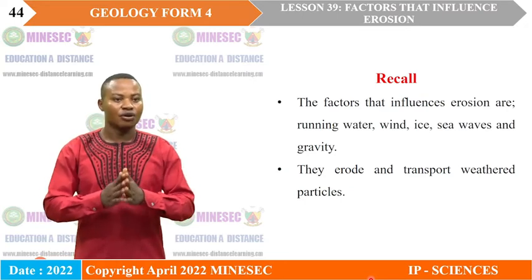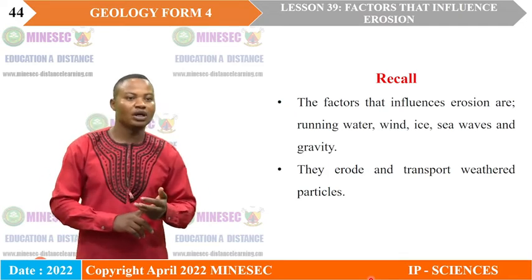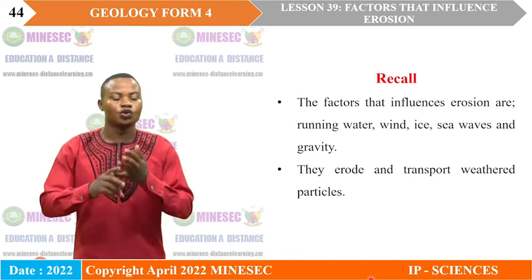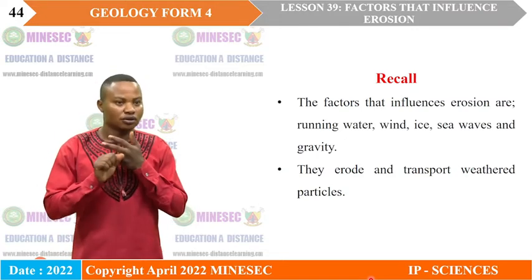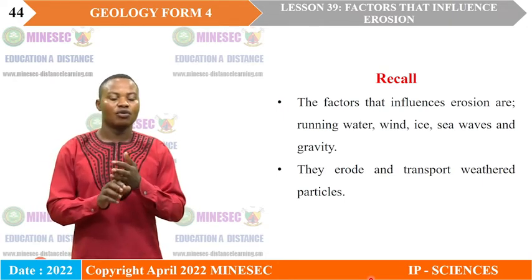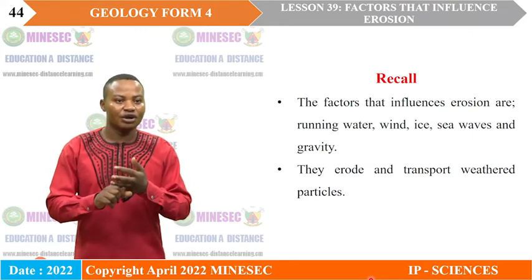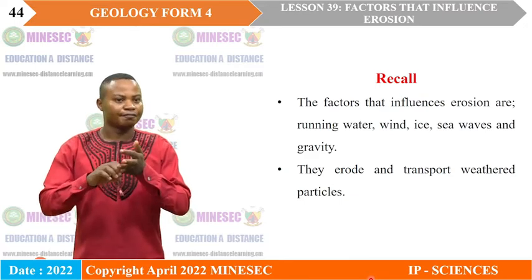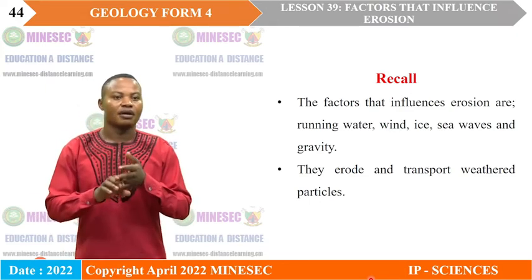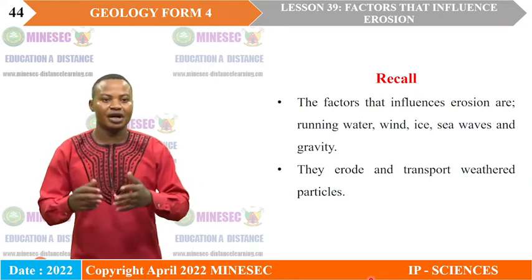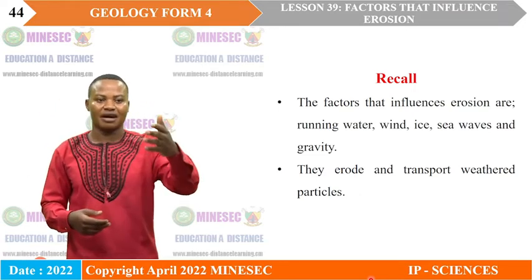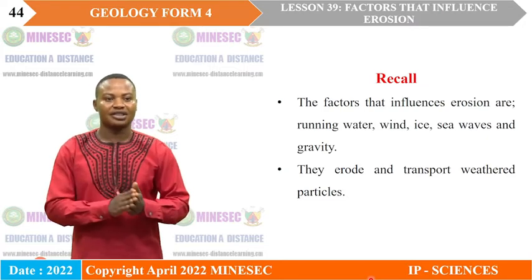Running water influences erosion through erosional processes — hydraulic action, abrasion, attrition, and solution — and transportational processes — traction, saltation, suspension, and solution. Wind action, dominant in the desert, influences erosion through erosional processes — deflation, abrasion, and attrition — and transportational processes — surface creep, suspension, and saltation. Sea waves have the same erosional modes as water, with transportation via swash and backwash. Gravity transports materials downslope, aiding all the above agents.